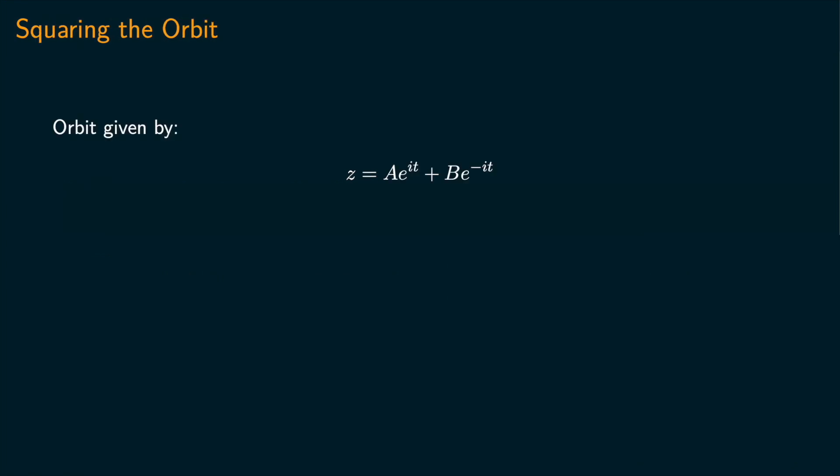When we square this orbit in the complex plane, we get the following, which is an ellipse with foci at plus or minus 2pq, shifted by 2pq. So it's an ellipse with one focus at the origin.